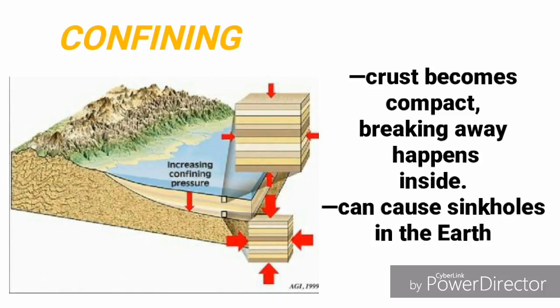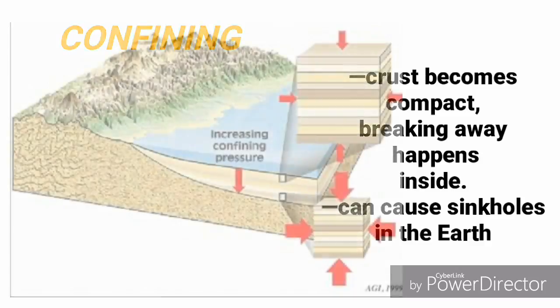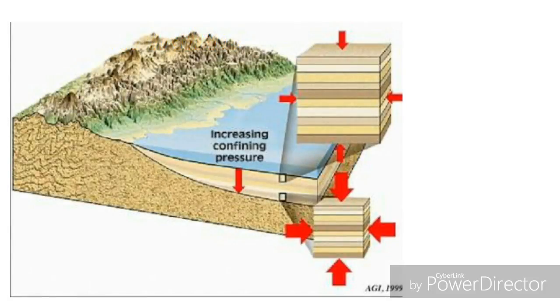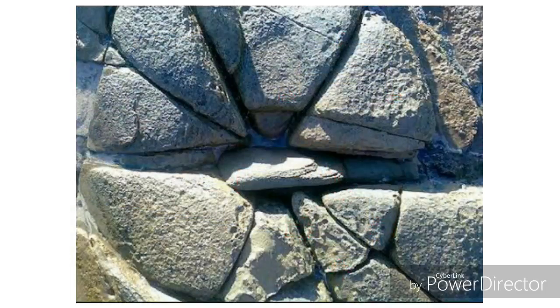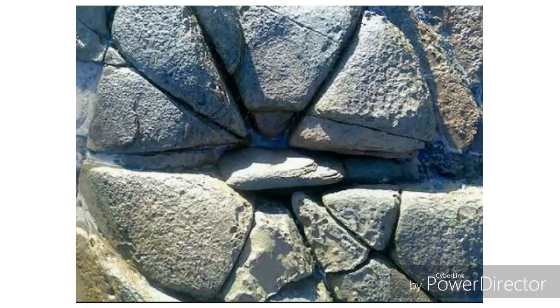Confining stress: When stress is applied to all sides of the crust, confining stress occurs. When this happens, the crust compacts, which makes it look smaller. If the stress is too much for the crust to handle, the crust can fracture from the inside, which can hollow out the interior.